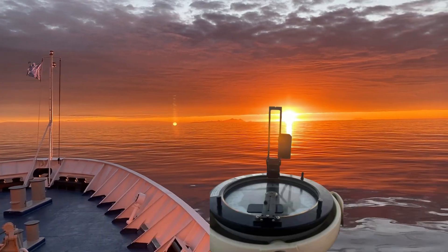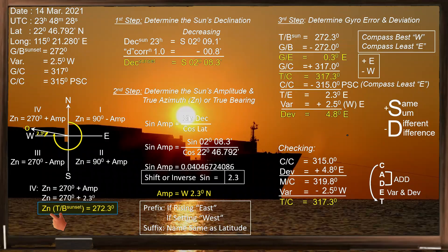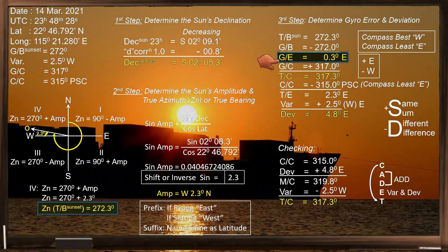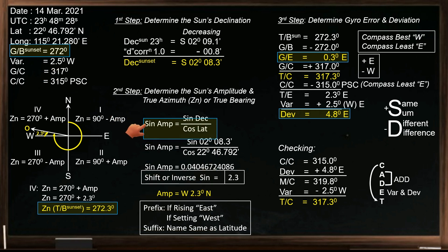In my previous video about amplitude problem, I showed you how to determine true azimuth, gyro error, and the deviation of the ship's heading during sunset using the formula: sine amplitude equals sine declination divided by cosine latitude.